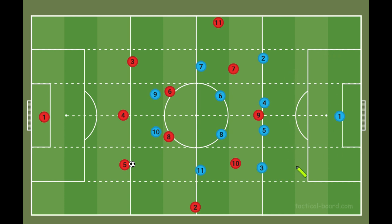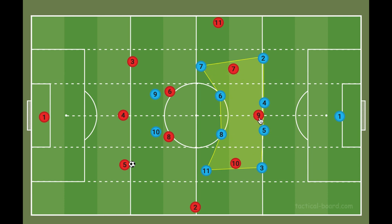Other than the space in behind — which should be protected at all times based on the positional cues of the defense — the next most dangerous space is in the central corridors and between the lines. The space between the lines and in the central corridors is the most valuable and should be protected at all times, whether through cover shadows or compactness principles — vertical and horizontal compactness — giving multiple players access to these areas. If the ball enters between the lines, pressure can be mounted and the ball can be won.